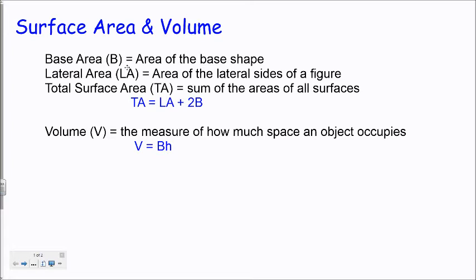The total surface area is basically the sum of the areas of all the surfaces, which is the lateral area plus the two bases that make up the total area of the prism. The volume is just the measure of how much space that the object occupies, and its measure is equivalent to the area of the base times the height of the prism.